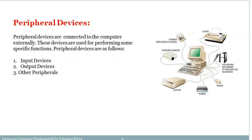We have three categories of peripheral devices: input devices, output devices, and other peripheral devices. Input devices allow us to give input to any computer. When data is processed, it converts into information. That useful information comes to us through output devices. We also have other peripheral devices beyond input and output.